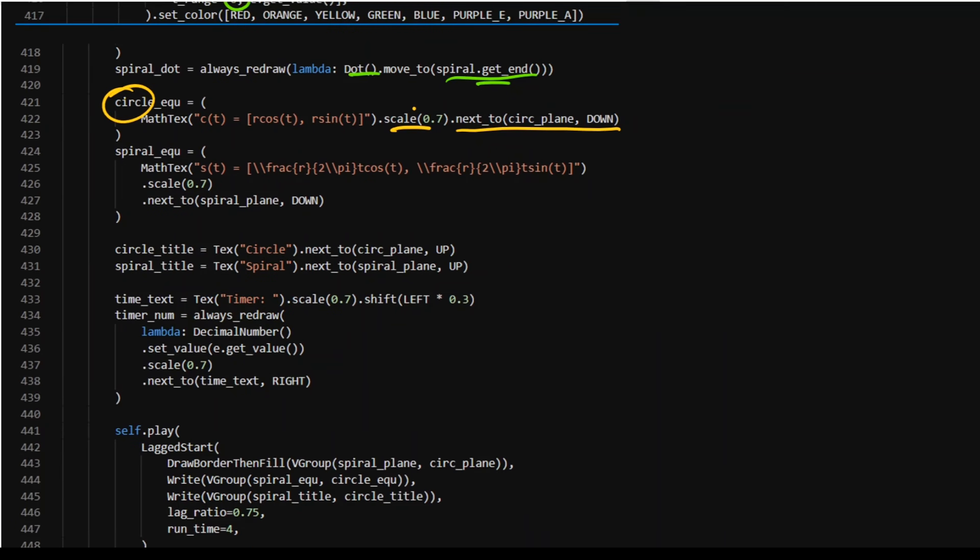Similar thing for my spiral, size, move. And then I've got my titles, which is just circle and spiral, just putting them up the plane and versus the other ones, which is just down the pipe. Just positioning however I want them to.